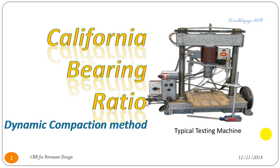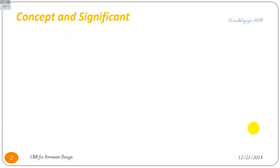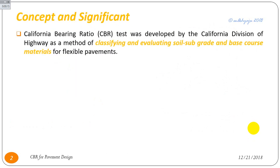CBR — California Bearing Ratio — by Dynamic Compaction Method. The CBR test was developed by the California Division of Highway as a method of classifying and evaluating subgrade soil and base course material for flexible pavements.